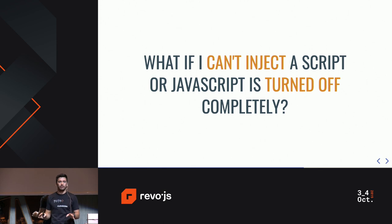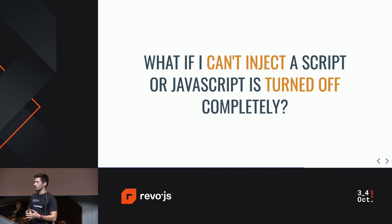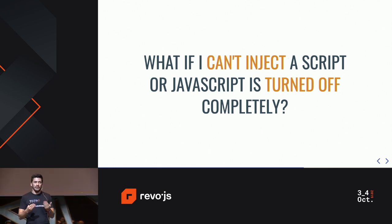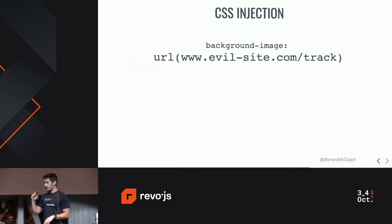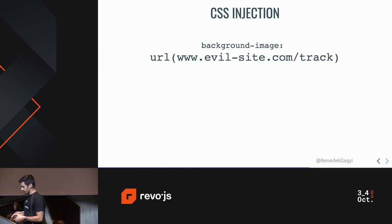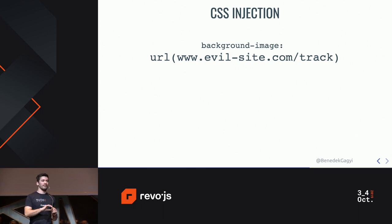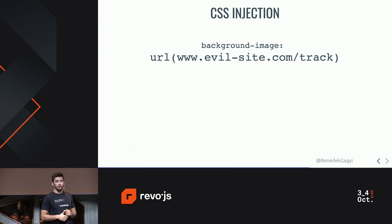But what happens if you're simply not able to inject a script? All of these require you to be able to inject a script tag or some kind of JavaScript. No worries — you can still do XSS. You can inject CSS. So let's say that you're able to inject one single line of CSS into a page and everybody else who views it will also have that CSS line.